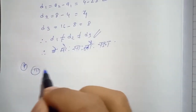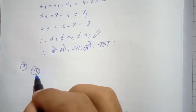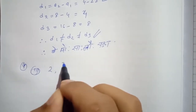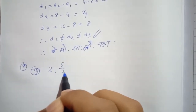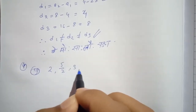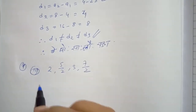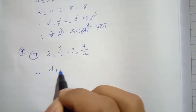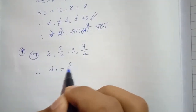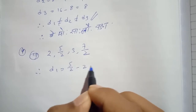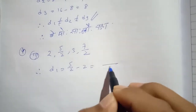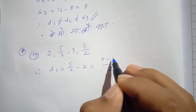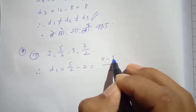These numbers are 2, 5 by 2, 3, 7 by 2. Therefore, D1 is 5 by 2 minus 2. The other number is 2. 5 minus 9 is 4.